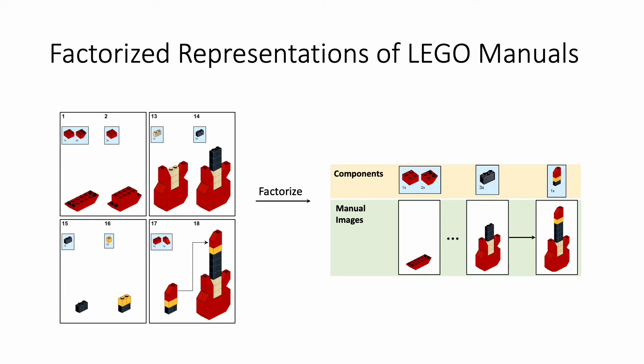To solve this task, we first factorize the original LEGO manual into two parts: a series of components and manual images. Once we obtain this factorized representation, we can formulate the problem as a sequential prediction task.